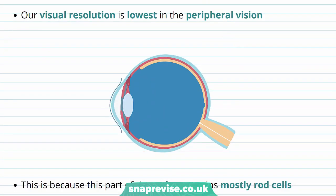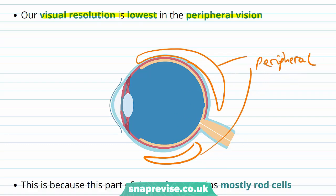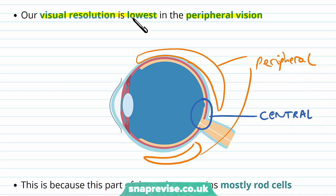Our lowest resolution — the least focused area in our retina — is in our peripheral vision. We have two types of vision: peripheral and central. Peripheral vision covers the areas to the side and to the top and bottom of our eye, while central vision is at the back of the retina in the centre. The peripheral has the lowest resolution and the central is the best.